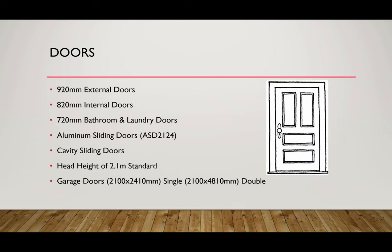For our housing, doors are 920mm for external, 820mm for internal, and 720mm for wet areas like bathrooms and laundry. We use annotation codes: an aluminium sliding door is ASD, with the format height then width — so ASD 2124 means 2.1 meters high and 2.4 meters wide. A cavity sliding door is CSD. The head height is the standard 2.1 meters — that's the top of the door frame. Garage doors are typically 2.1m high by 2.4m wide for a single garage, and roughly double for a double garage.